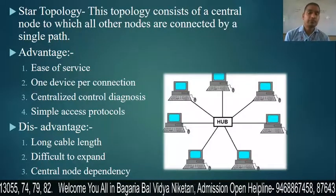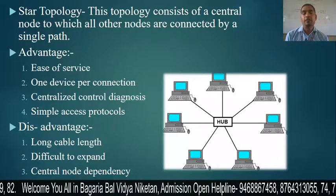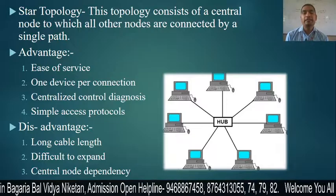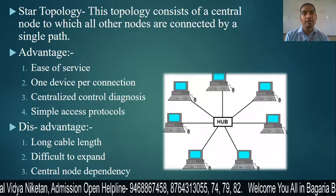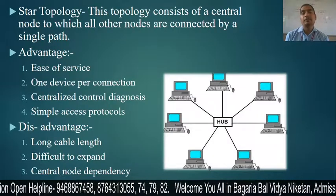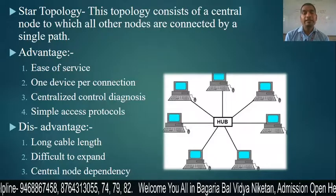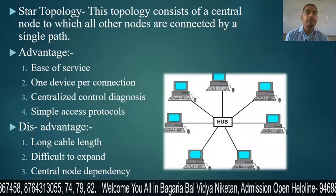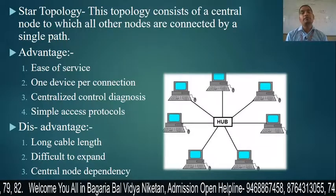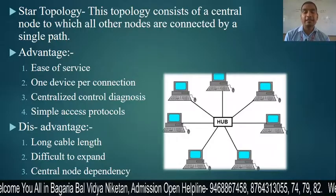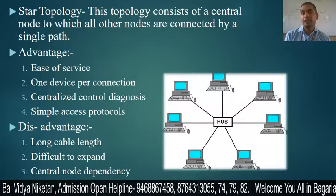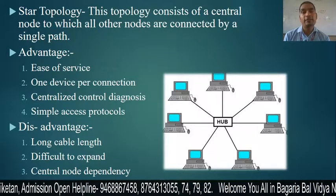The first topology is star topology. In this topology, it consists of a central node to which all other nodes are connected by a single path. All nodes are connected to a central node, which we call the controller or hub. If we have to send data, we first generate a request to the controller. The controller gives permission, then we send the data to the destination point. In case of failure, if your data is not transmitted, we can recover it as well.